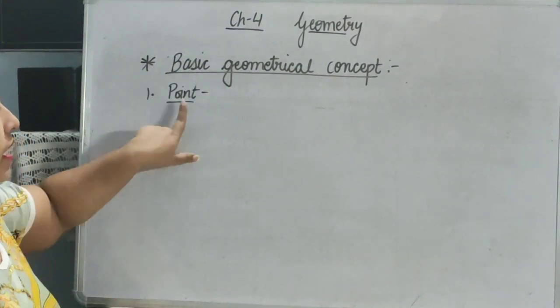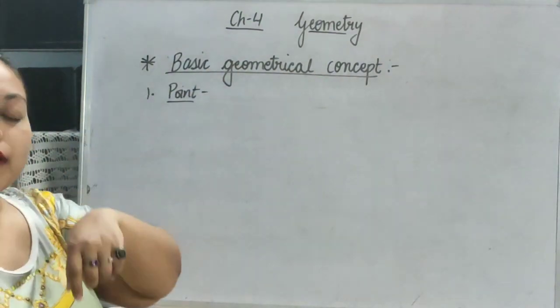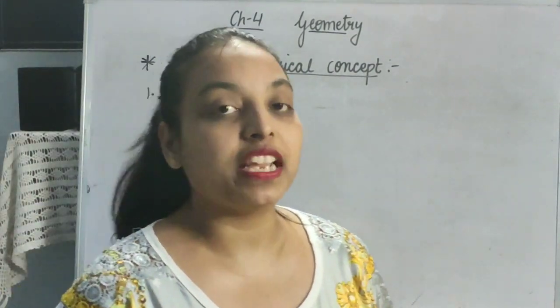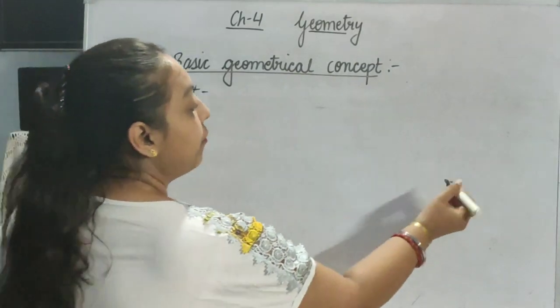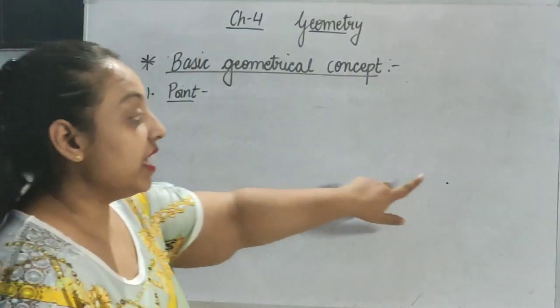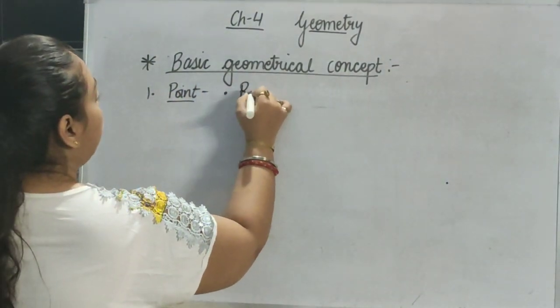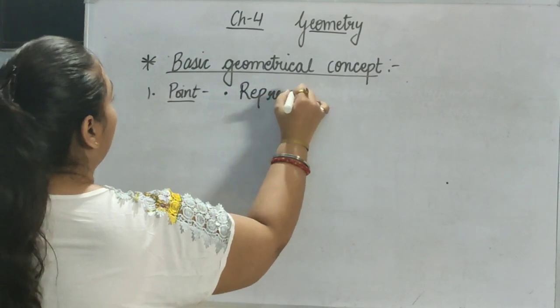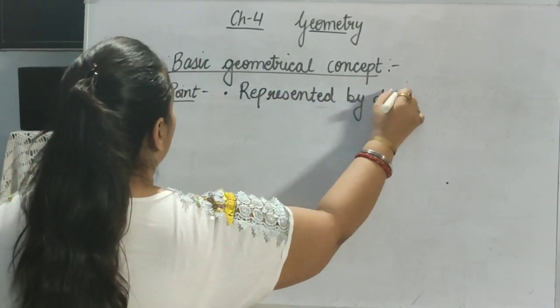Now we are going to start the first basic geometrical concept, that is point. Have you ever heard about the dot? Yes, we have heard many times. We can draw a dot with a sharp pencil. So we can say, this dot is known as point. So first point is, represented by dot.